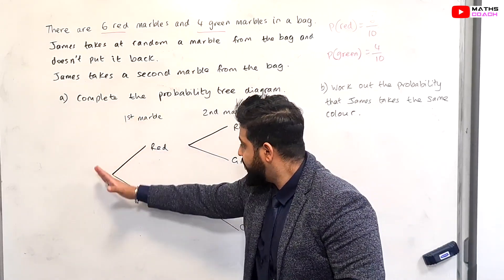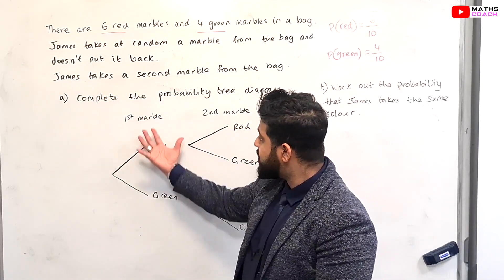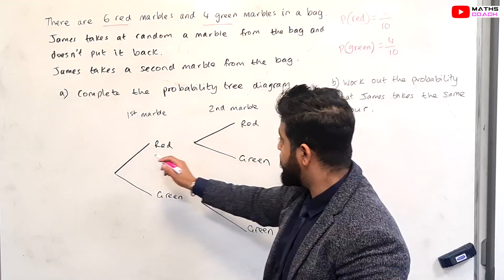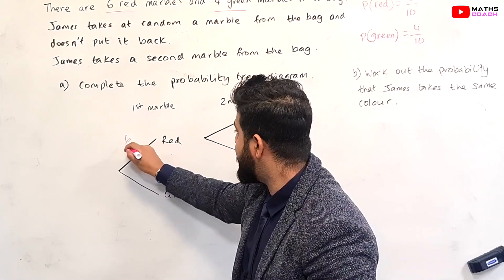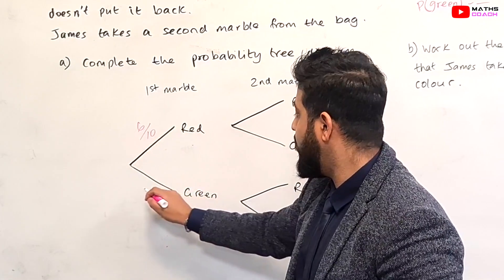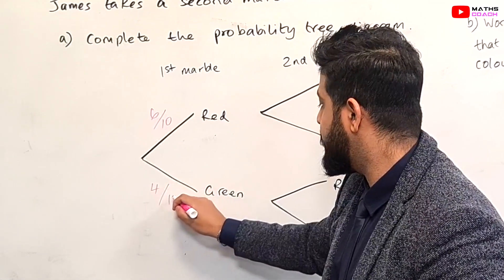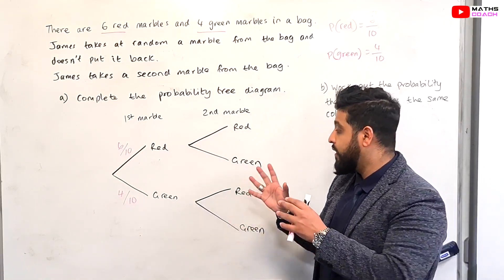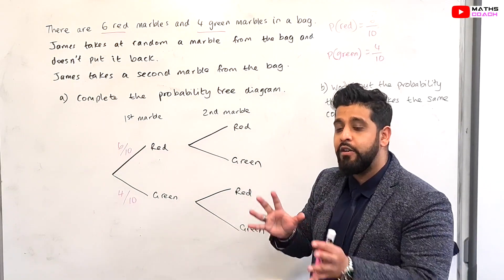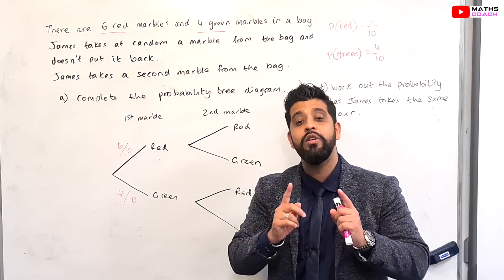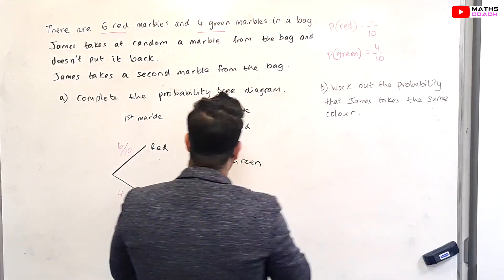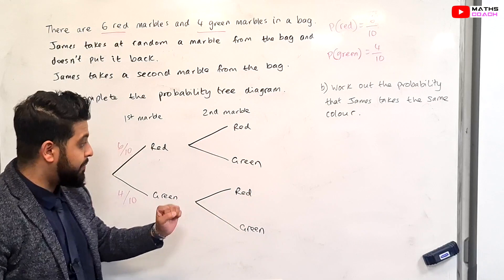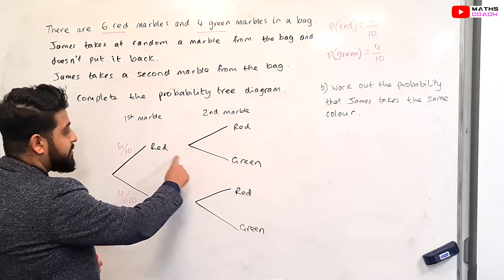So let's begin with the first branch. The first marble that James can select can either be a red, which is 6 out of 10, or it can be a green, which is 4 out of 10. Now this is where people sometimes fail to write the correct probabilities, so pay attention here. When we go for our second marble from the bag, you have to follow this route on the tree diagram.